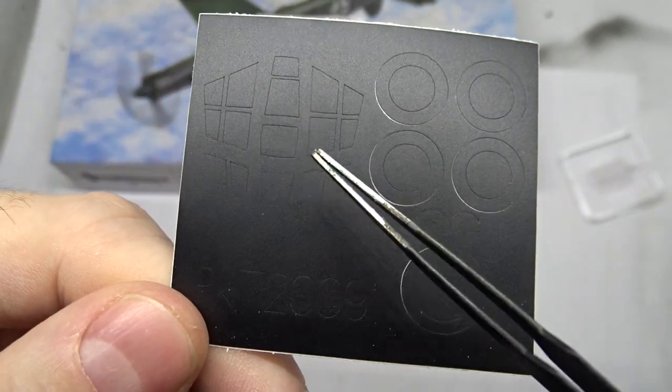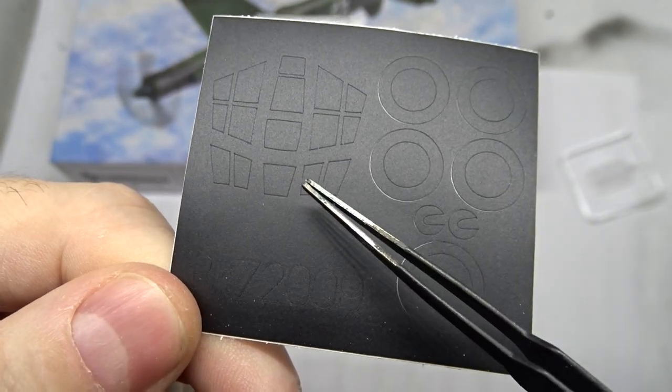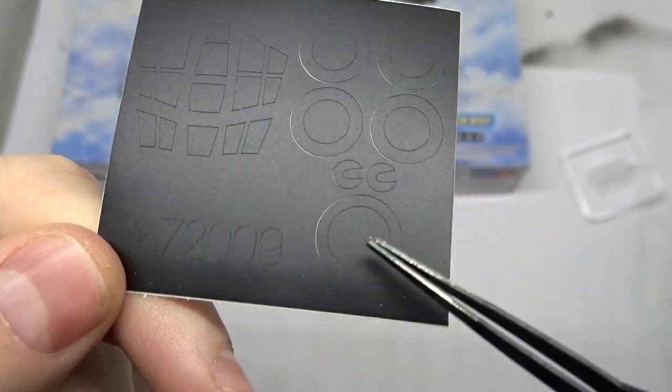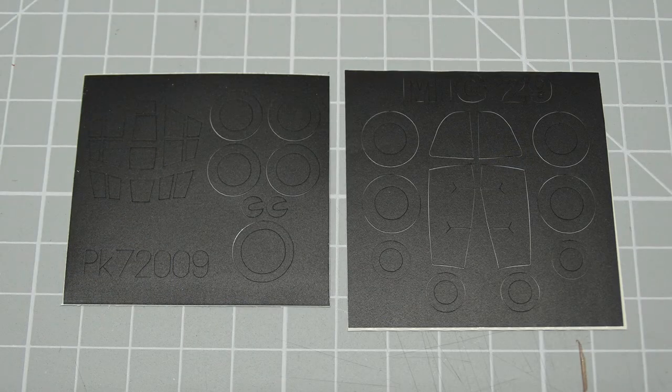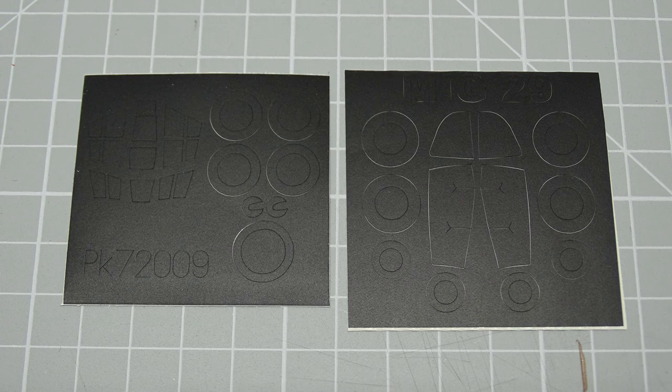So here we have the stickers for the canopy and next to it also some for the wheels. If you can spare some change and want to save yourself from the trouble of masking everything yourself I would recommend doing this.